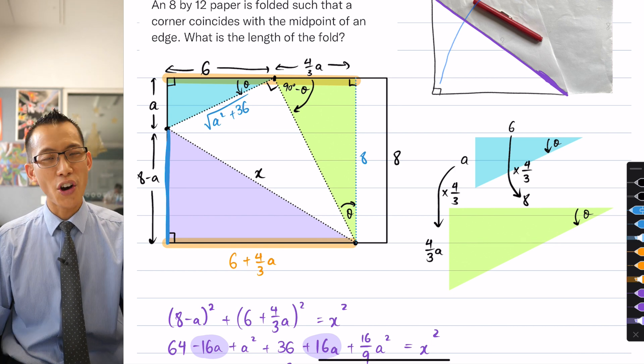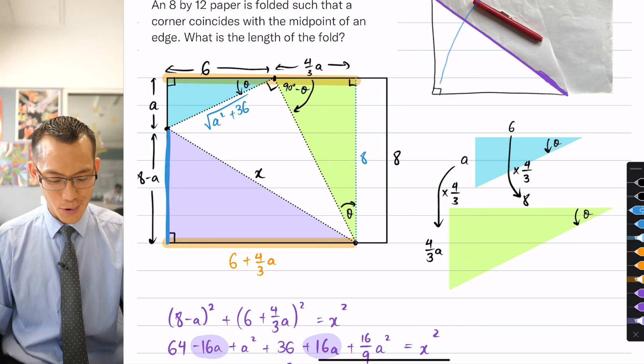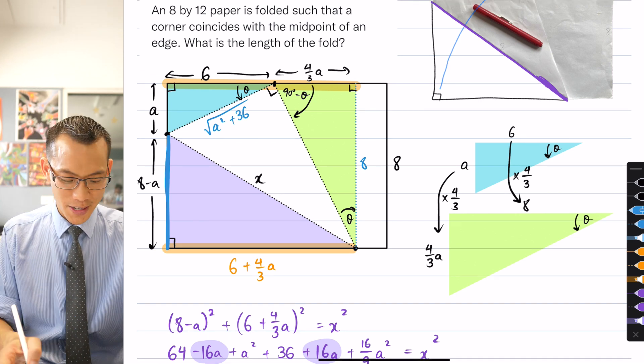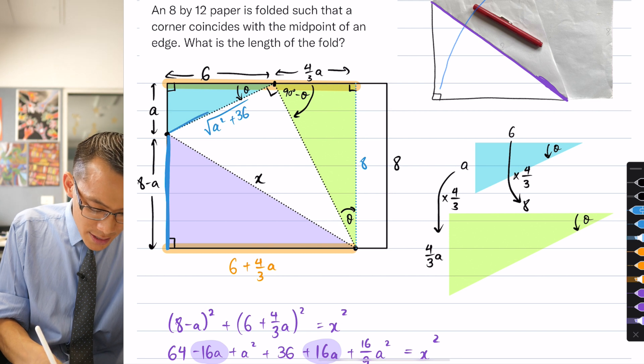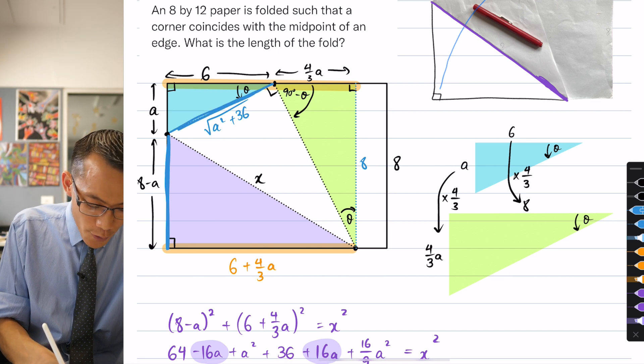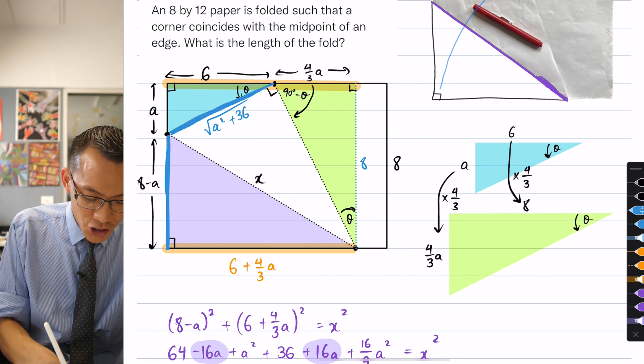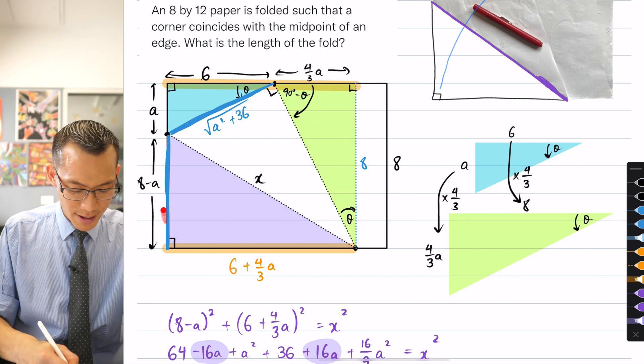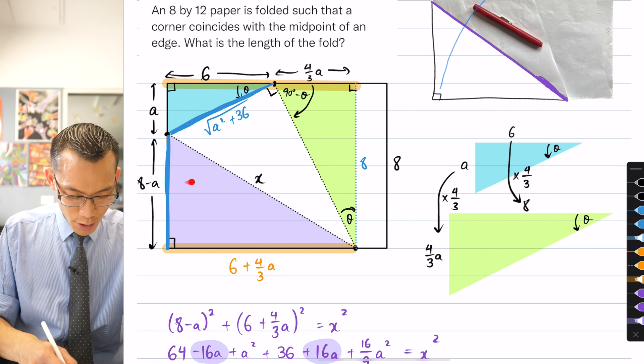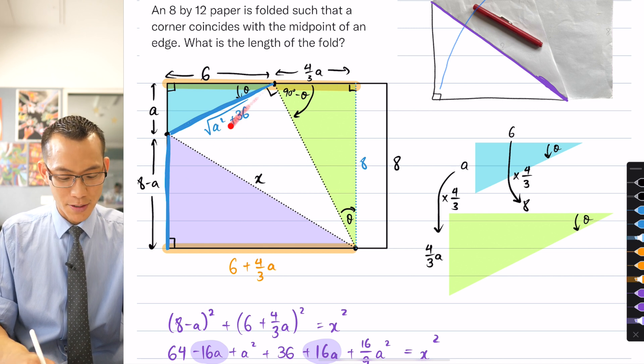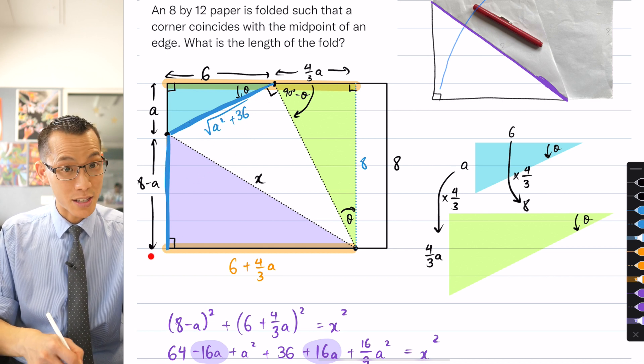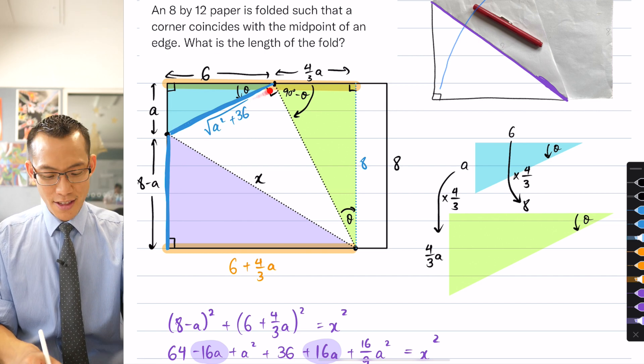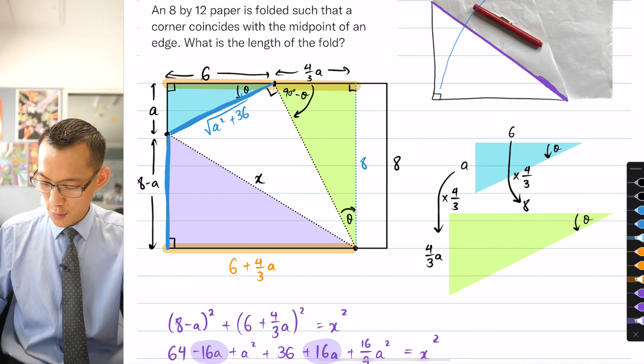Did you notice that this length over here, which I have marked in as 8 minus A, where does it go when you complete the fold? And the answer is, and you'll see this if you actually do the folding yourself, it becomes this hypotenuse over here of the blue triangle in the top left hand corner. Can you see that literally this length here, it sort of rotates around and swings up so that it can bring this corner into the right spot? So these two lengths are equal.